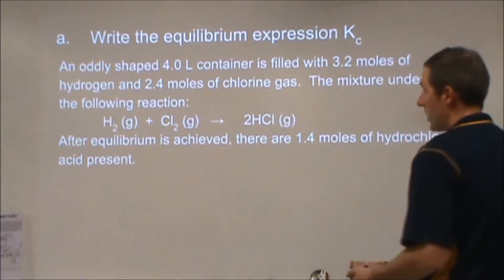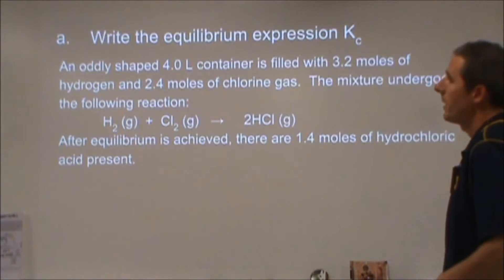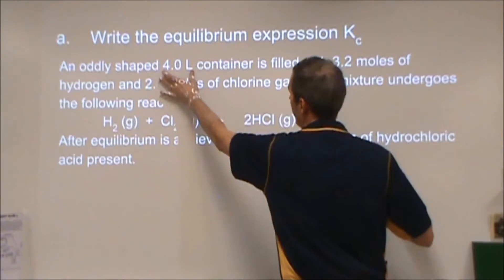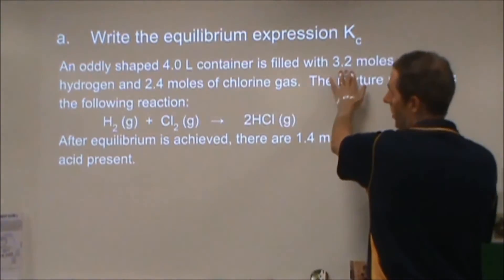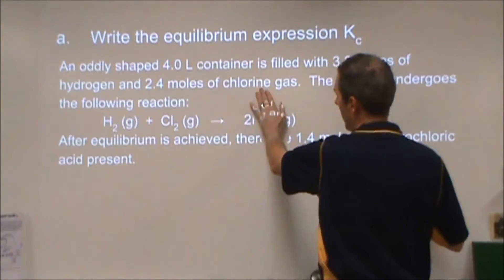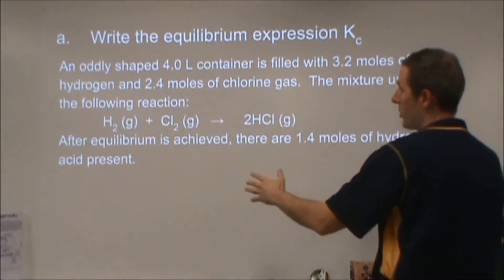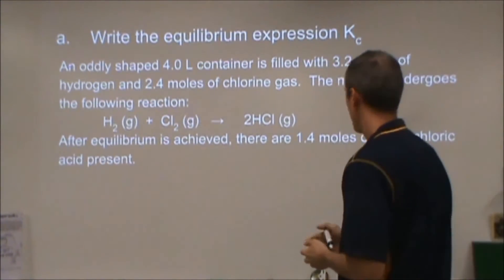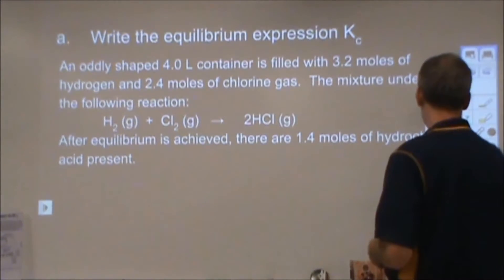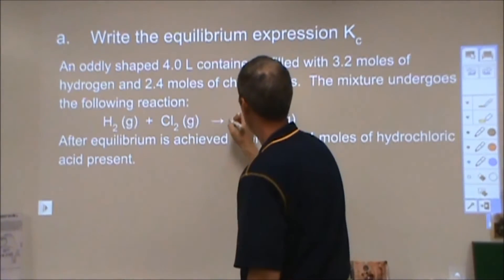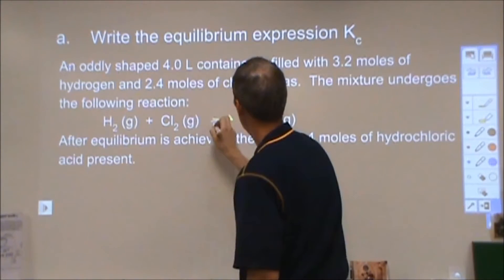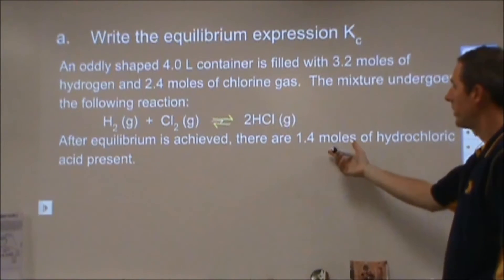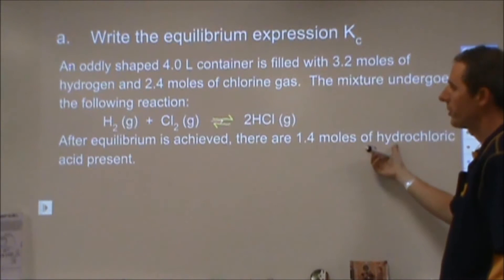So lots of information at the beginning. We'll start by kind of breaking that down and then we'll look at the first question. We have an oddly shaped 4 liter container, so we have our volume. It's filled with a certain number of moles of hydrogen gas and moles of chlorine gas and the mixture undergoes this following reaction and we get an equilibrium set. So to be clear there, this should be this style arrow.